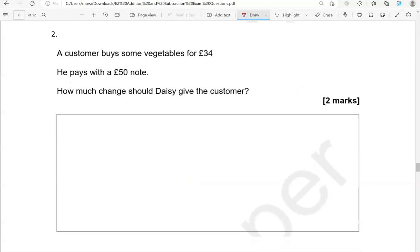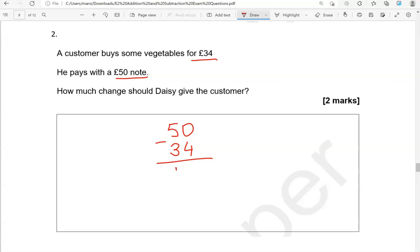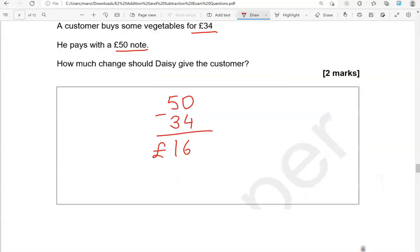A customer buys some vegetables for £34. He pays with a £50 note. How much change should Daisy give the customer? Daisy is the shop assistant. So £50, that is got, take away £34 that has been spent on vegetables. We're going to work out how much change. So 50 take away 34 gives us 16. 16 what? £16, because it could be pence as well. So it's important we add that.